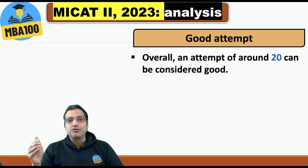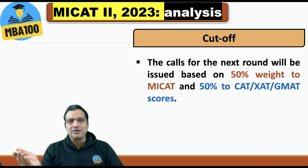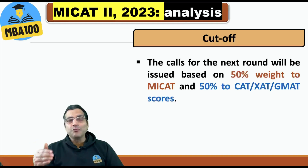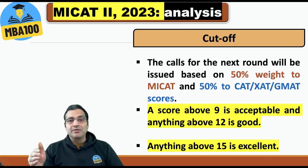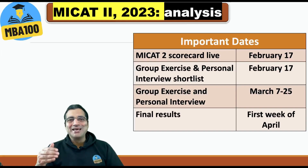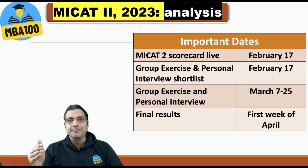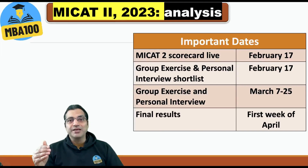An overall attempt of around 20 in the entire test can be considered good. There is no concept of a cutoff here, because 50% weight is given to your CAT or XAT score and only 50% to MICAT. Any score above 9 is acceptable, anything above 12 is good, and anything above 15 is excellent. The MICAT 2 scorecard will be live on February 17. GE and PI shortlists will also be out on the same day. Group exercise and personal interview will take place from March 7 to 25 depending on your city of choice. Final results: first week of April.